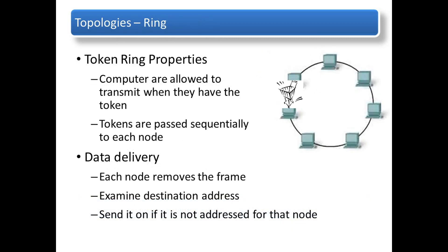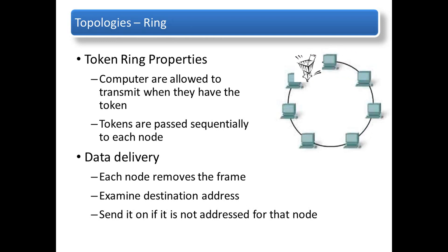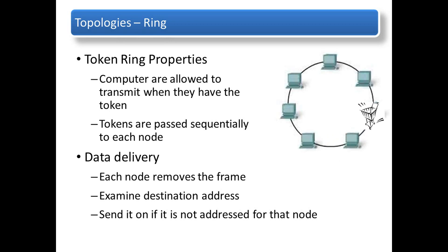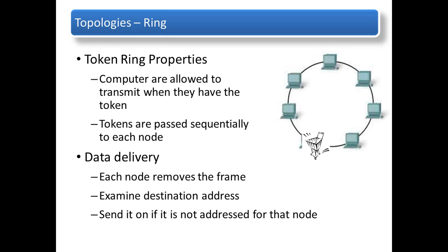In a logical ring topology, each node in turn receives a frame. If the frame is not addressed to the node, the node passes the frame to the next node. This allows a ring to use a controlled MAC technique called token passing. Nodes in a logical ring topology remove the frame from the ring, examine the destination address, and send it on if it is not addressed for that node. All nodes around the ring between the source and destination node examine the frame.